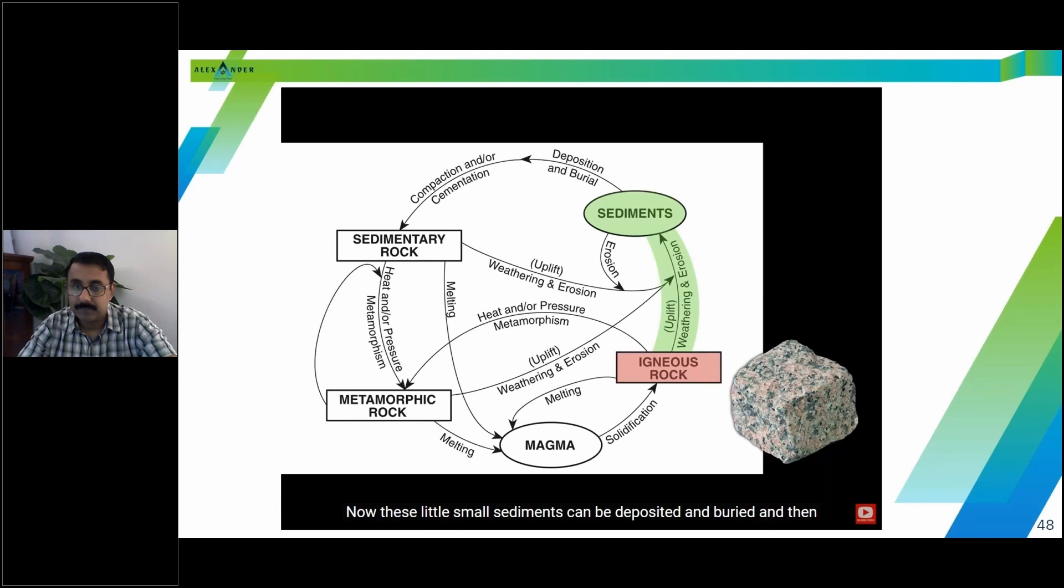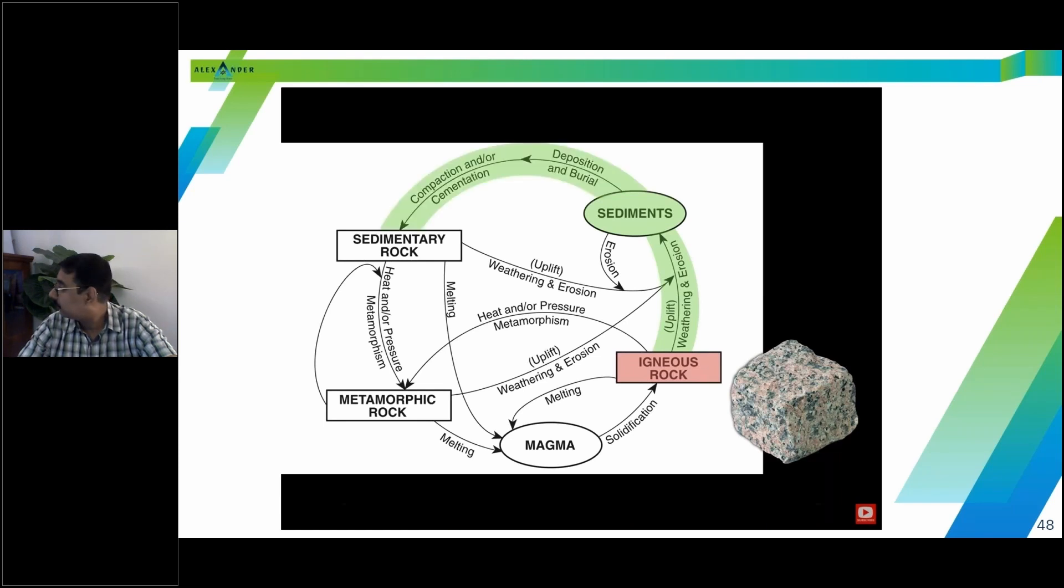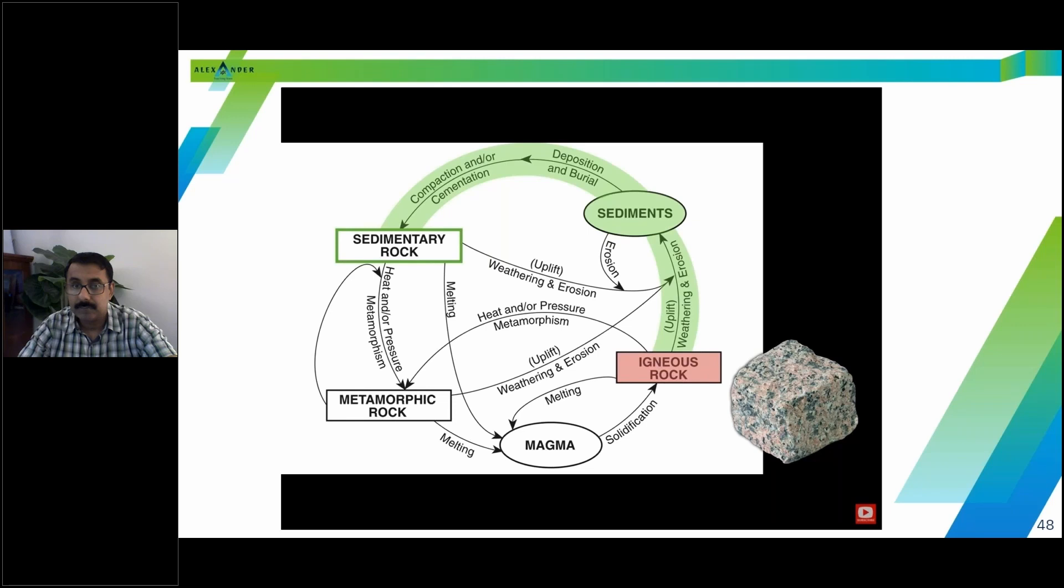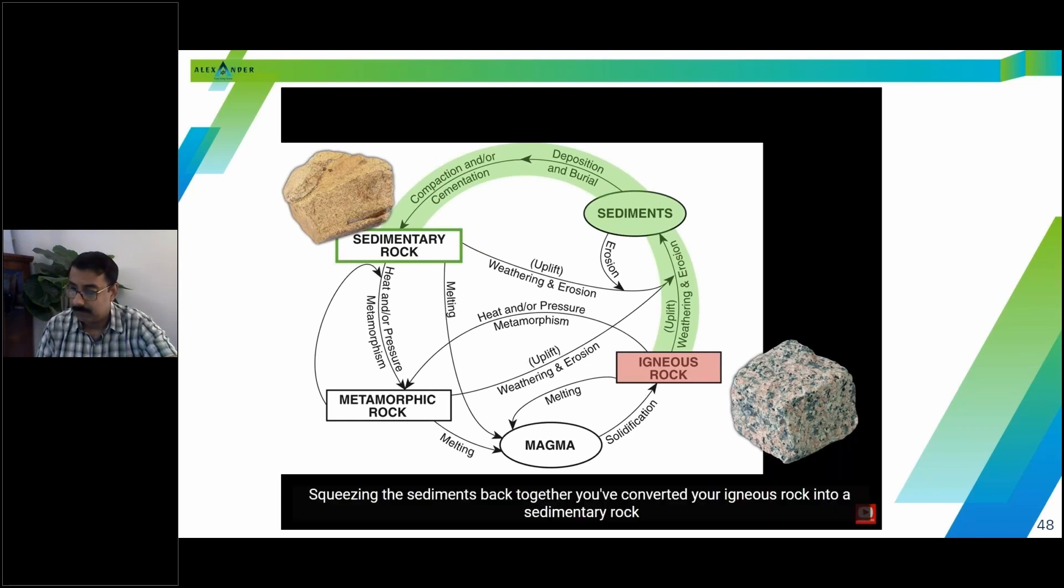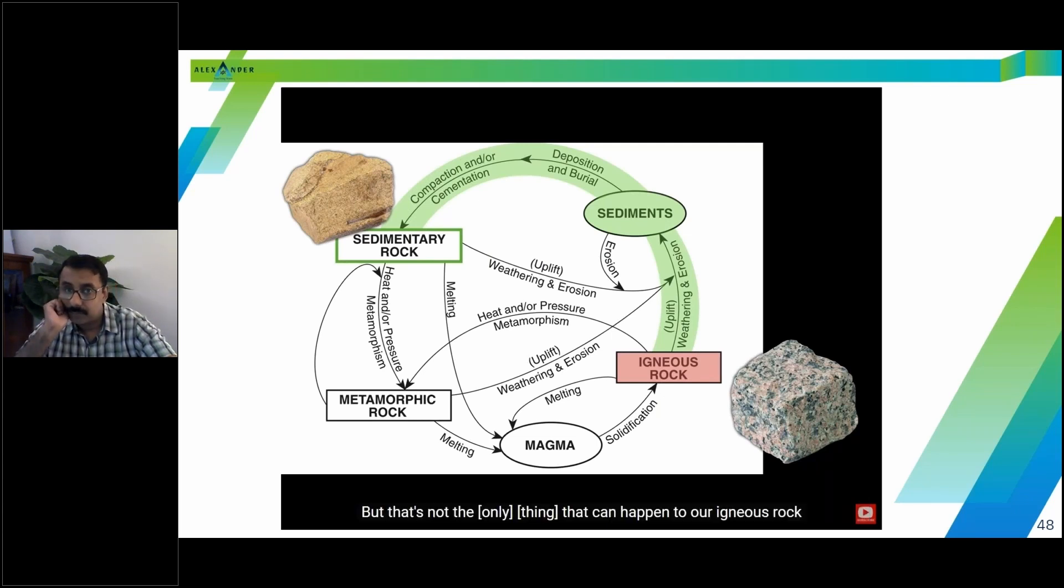Now, these little small sediments can be deposited and buried and then compacted and cemented together to form a brand new rock called a sedimentary rock, like this piece of sandstone. So simply by weathering and eroding the granite into sediments and then squeezing the sediments back together, you've converted your igneous rock into a sedimentary rock. But that's not the only thing that can happen to our igneous rock.